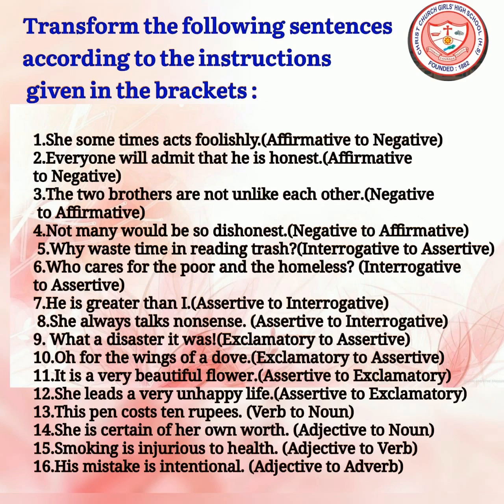(7) 'He is greater than I' — assertive to interrogative. (8) 'She always talks nonsense' — assertive to interrogative. (9) 'What a disaster it was!' — exclamatory to assertive. (10) 'Oh for the wings of a dove!' — exclamatory to assertive. (11) 'It is a very beautiful flower' — assertive to exclamatory. (12) 'She leads a very unhappy life' — assertive to exclamatory. (13) 'This pen costs 10 rupees' — use the noun form of the verb. (14) 'She is certain of her own worth' — replace adjective with noun. (15) 'Smoking is injurious to health' — replace adjective with verb. (16) 'His mistake is intentional' — replace adjective with adverb.